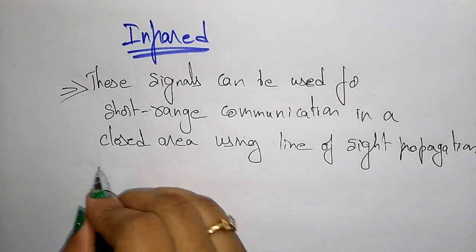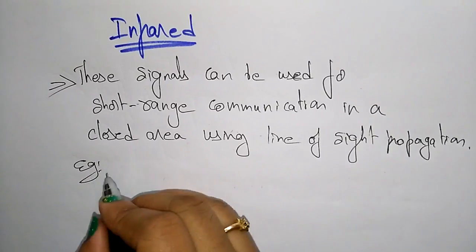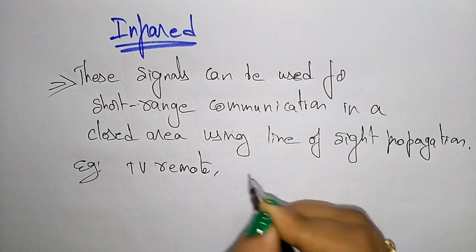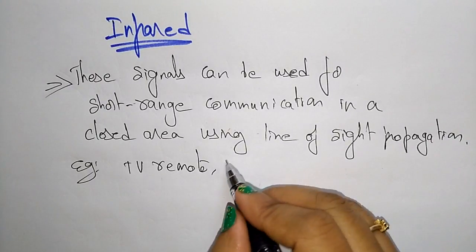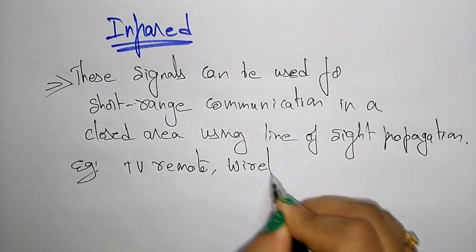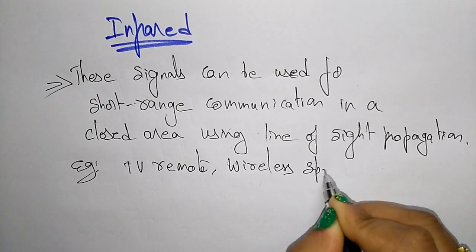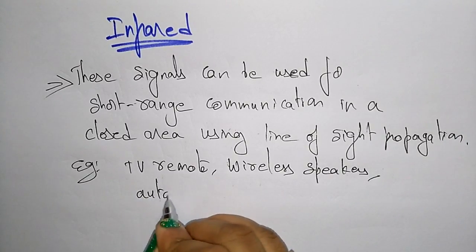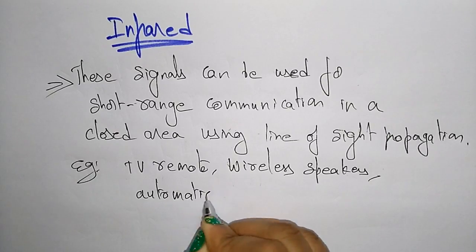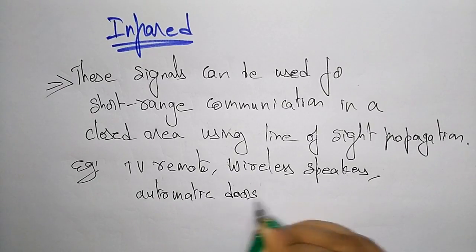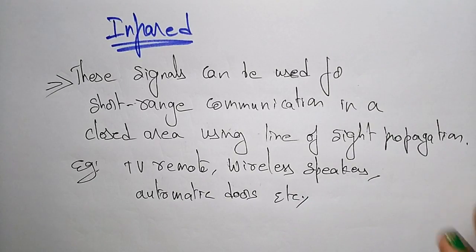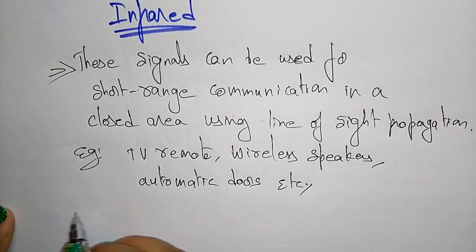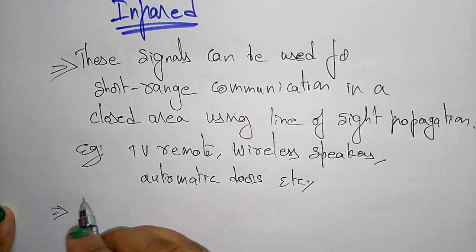Examples of infrared include TV remotes, wireless speakers, automatic doors, and home automation systems. Infrared cannot penetrate walls.